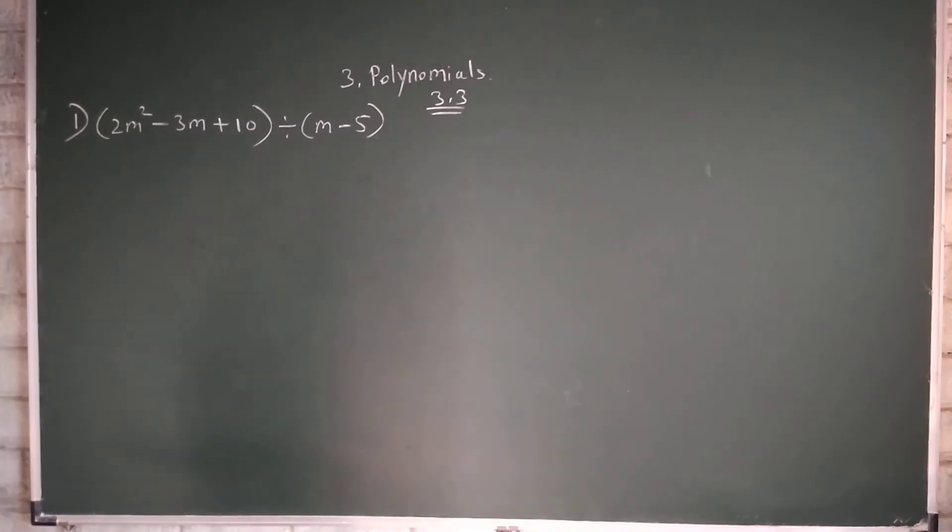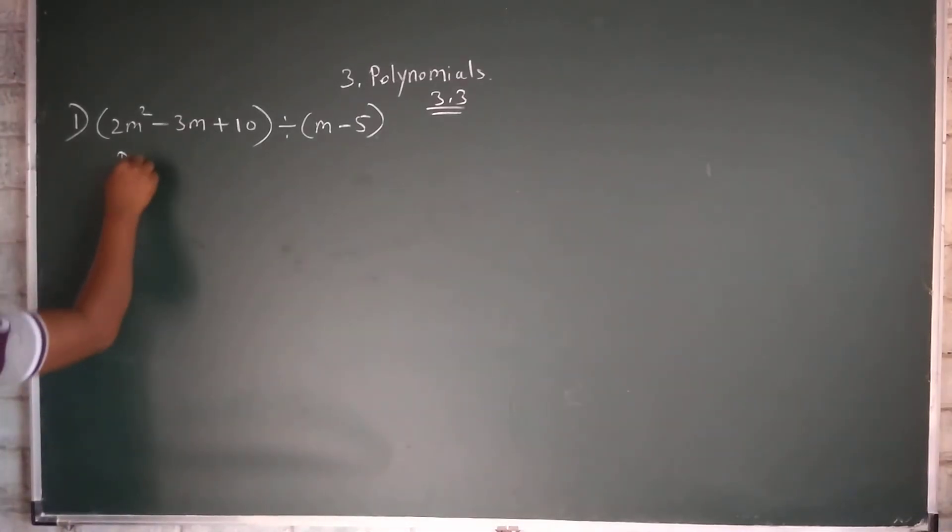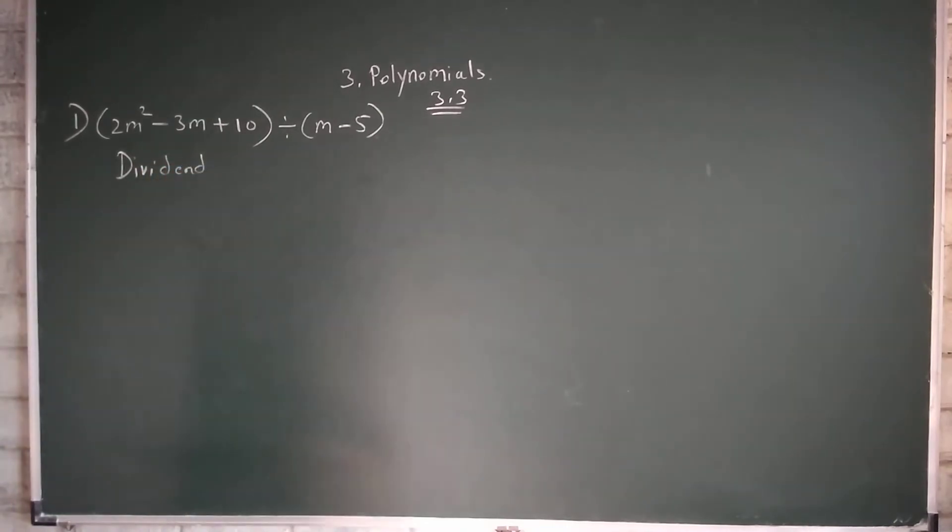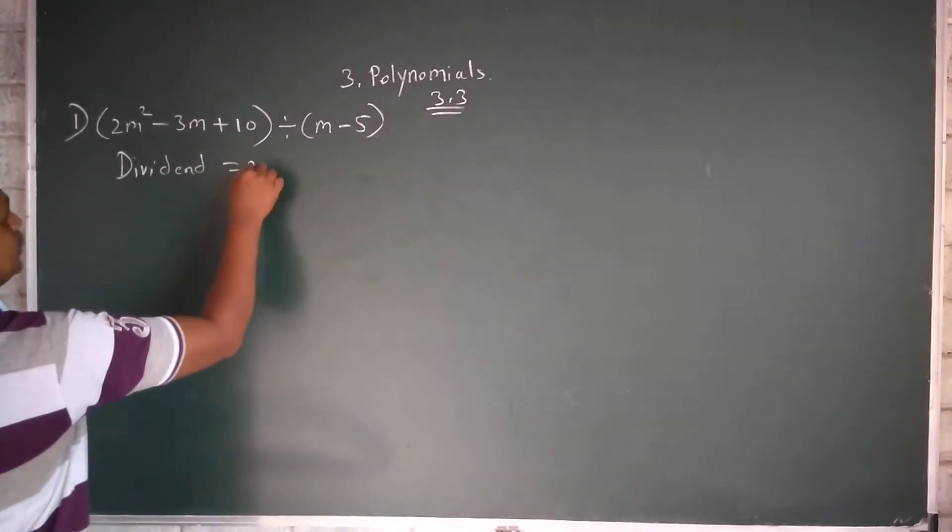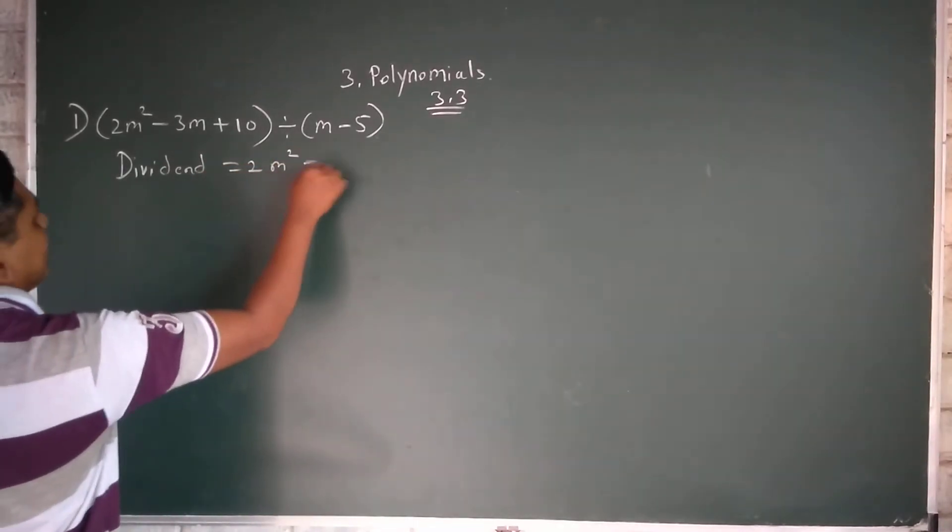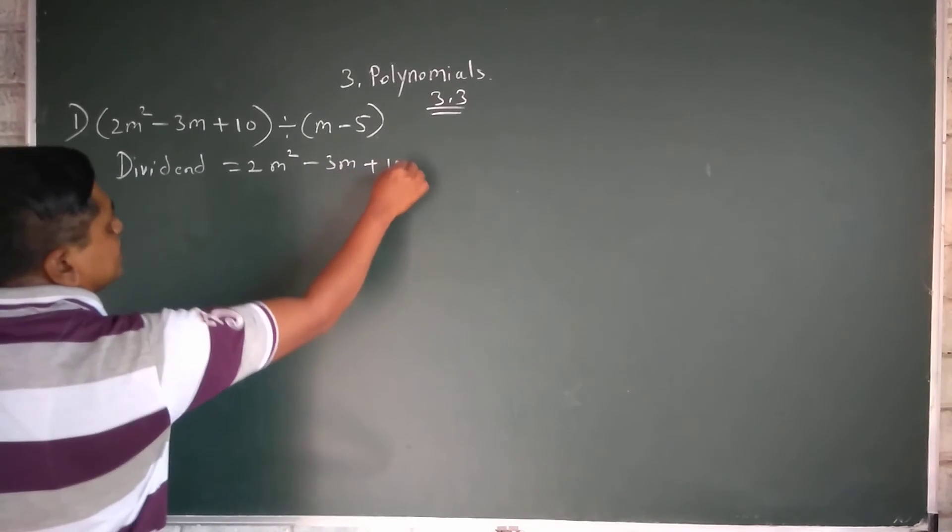First one: 2m² - 3m + 10 divided by m - 5. Now see, your dividend is 2m² - 3m + 10.